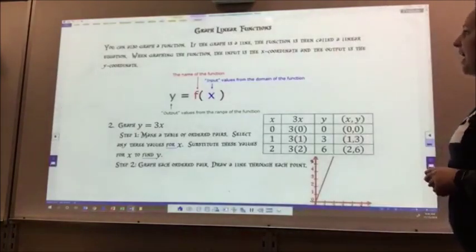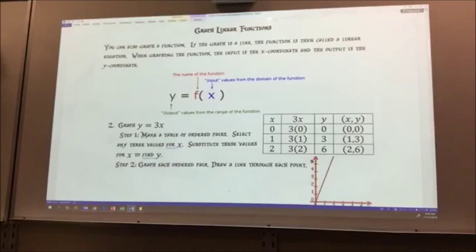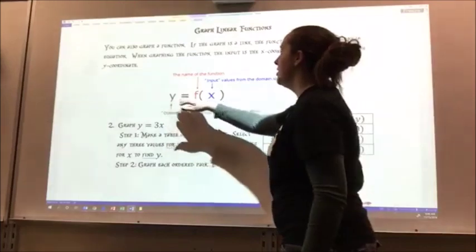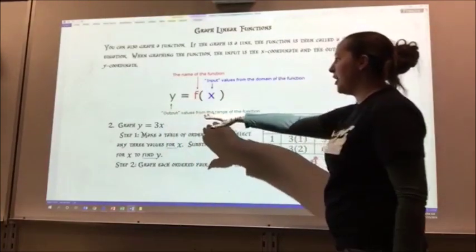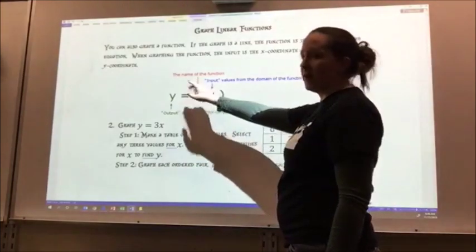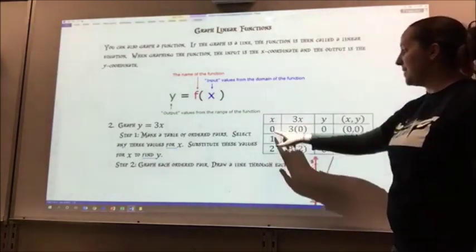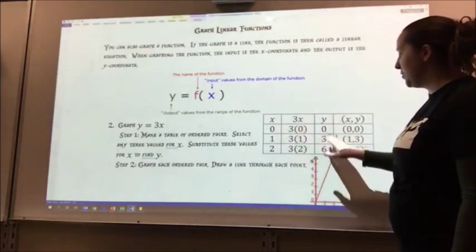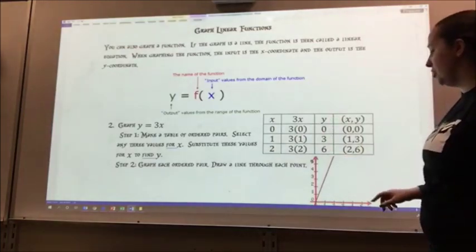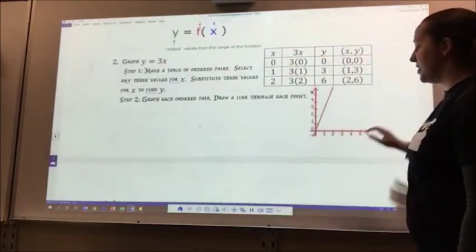You can also graph a function. If the graph is a line, the function is then called a linear equation. When graphing the function, the input is the x coordinate and the output is the y coordinate. Here is my function. My y is my output values from the range of the function. f is the name of the function, and x is the input values from the domain of the function. For number 2, graph y equals 3x.